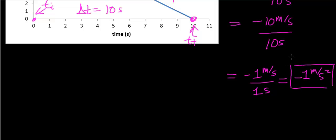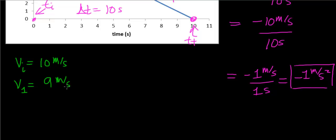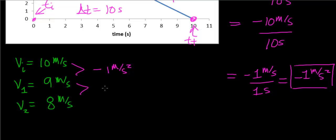What this actually means is that every second this object is decelerating, its velocity changes by 1 meter per second. So if the initial velocity is 10 meters per second, after 1 second the object's velocity should be 9 meters per second. After 1 more second, it goes from 9 meters per second to 8 meters per second, with the acceleration remaining constant at negative 1 meter per second squared.